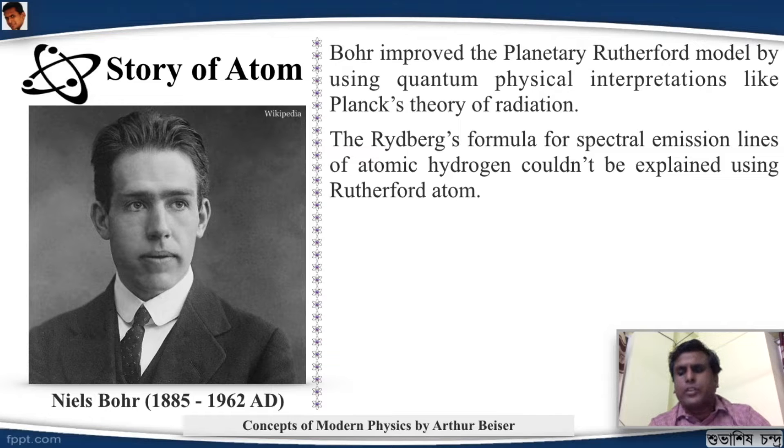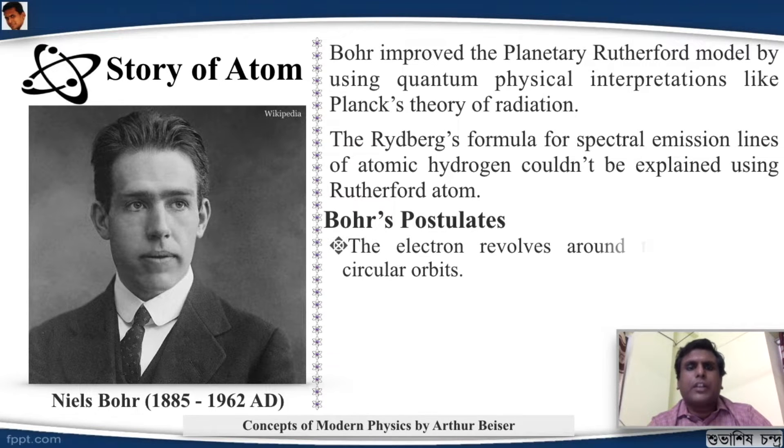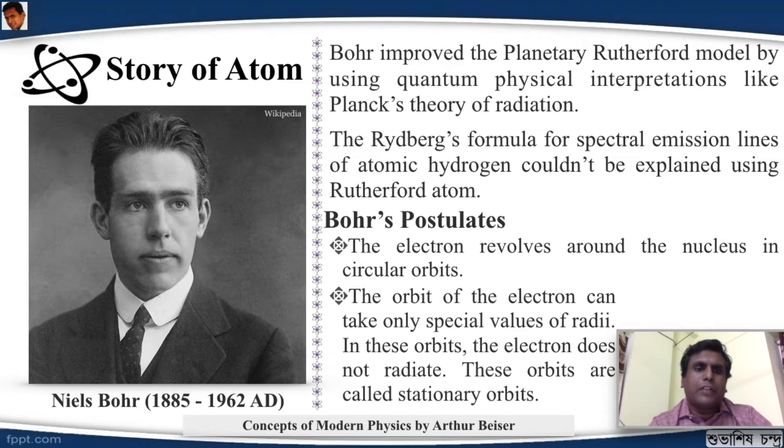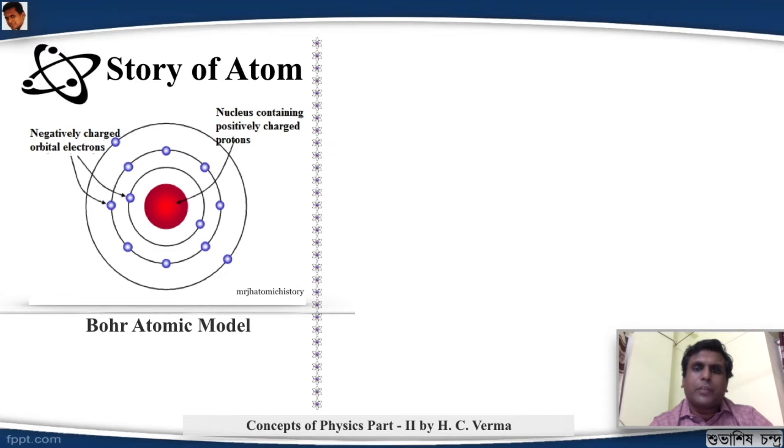So Bohr gave four postulates. His first postulate was the electron revolves around the nucleus in circular orbits. The orbit of the electron can take only special value of the radii. In these orbits the electron does not radiate. These orbits are called stationary orbits. So the electron if it stays in that orbit will not radiate. That is the Bohr atomic model.